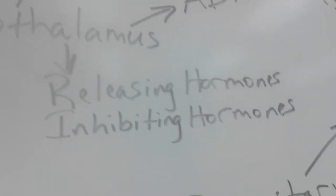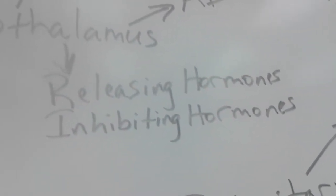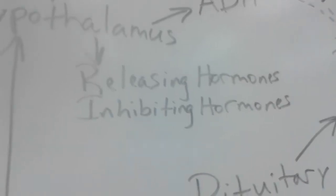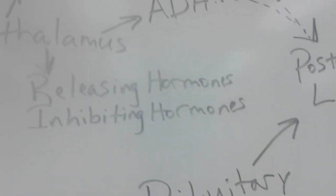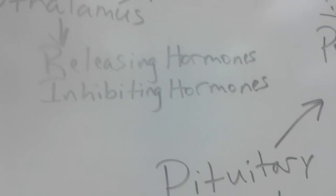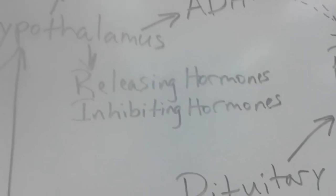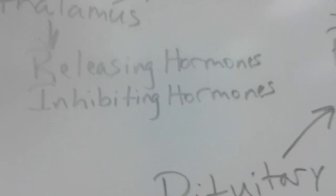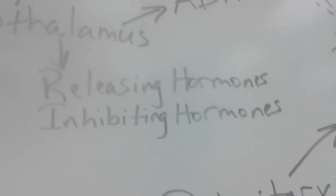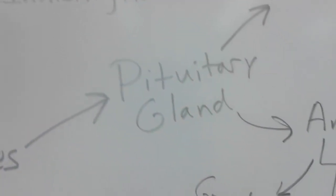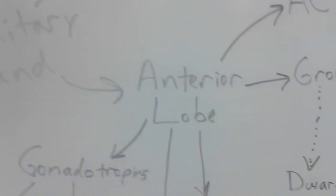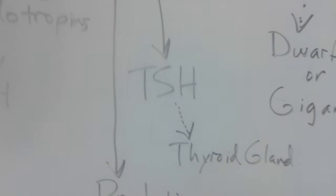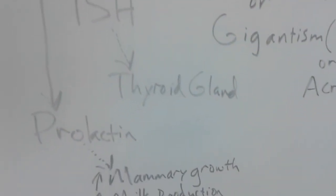If we back out of this we also notice that the hypothalamus releases releasing hormones and inhibiting hormones. Releasing hormones stimulate targets to get them to release something that they make. An example of a releasing hormone is thyroid releasing hormone. Thyroid releasing hormone has a conversation with the pituitary gland and it gets the pituitary gland to release thyroid stimulating hormone.